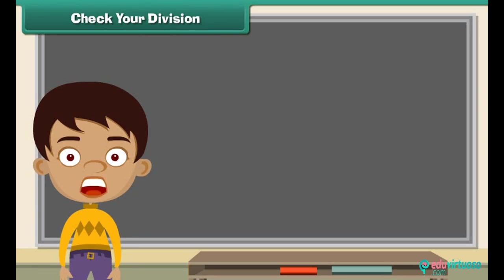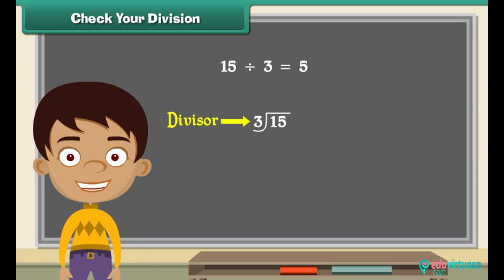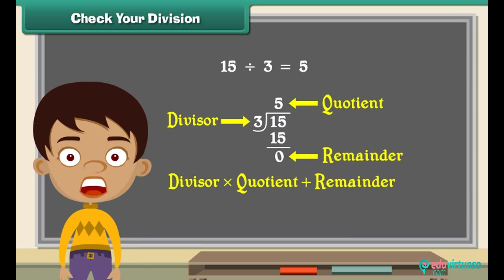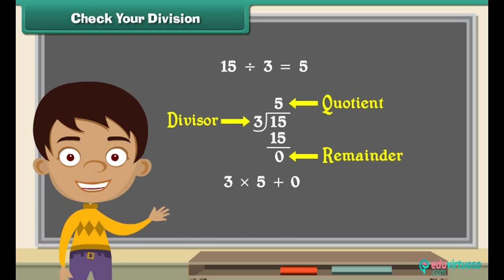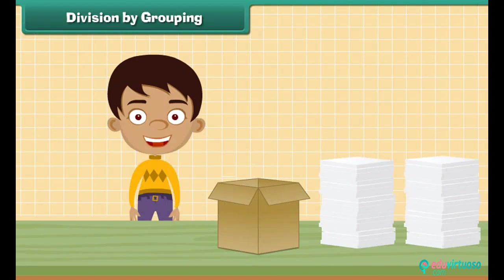There should be a way to check your answer — let us look into it now. Remember that fifteen divided by three is five. Is this answer correct? Let us check it. Here the divisor is three, the quotient is five, and the remainder is zero. To check the answer, multiply the divisor and the quotient, then add the remainder to the result. If the answer equals the dividend, then our answer is correct. Here the answer is fifteen, which equals the dividend, therefore the answer is correct.